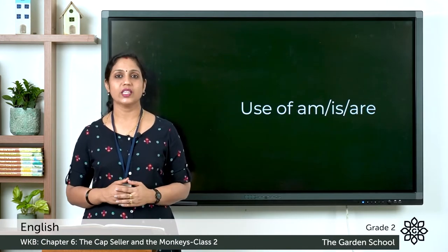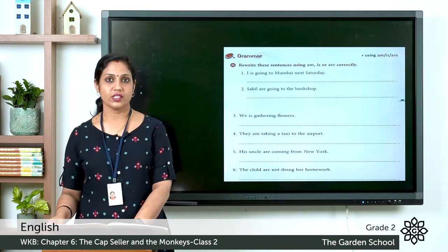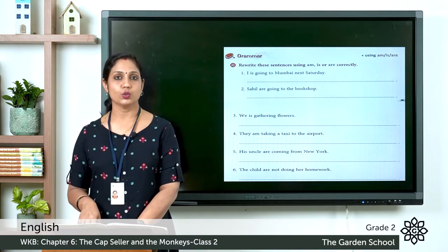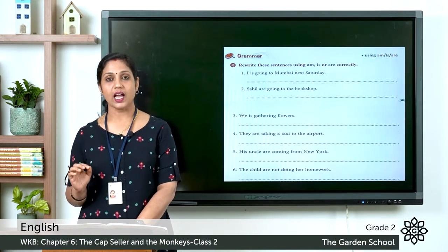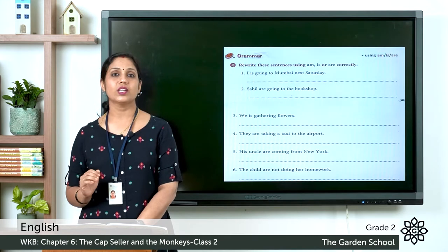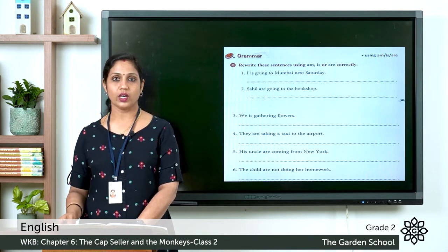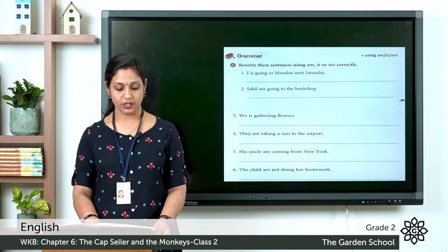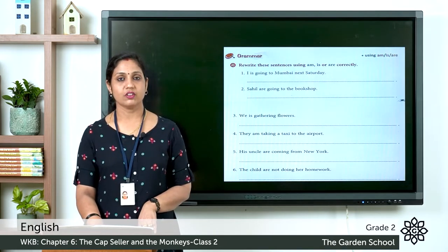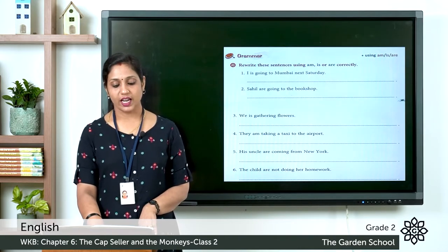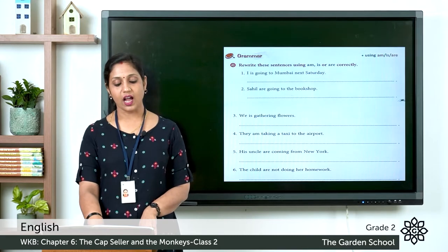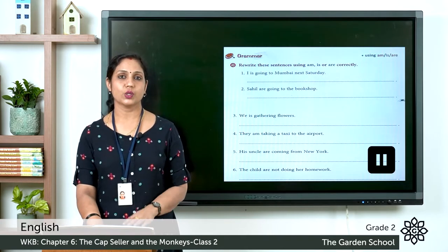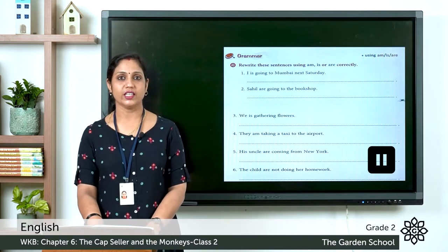Now let's start doing the exercises. The first question: 'I is going to Mumbai next Saturday.' We have to rewrite these sentences using am, is, or are. Second: 'Sahil are going to the bookshop.' Third, turn to page number 40: 'We is gathering flowers.' Fourth: 'They am taking a taxi to the airport.' Fifth: 'His uncle are coming from New York.' Sixth: 'The child are not doing her homework.' Pause the video, rewrite the sentences, then come back.